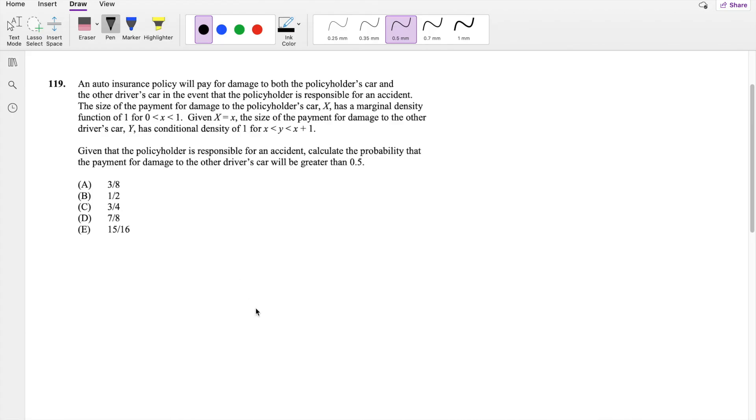In this question, I'll be going to Rule 119 on SOA Exam P. So pause the video real quick and try it yourself. Okay, assuming you've attempted it, let's just dive right in. They say the size of the payment x has a marginal density function, so f of x is equal to 1.